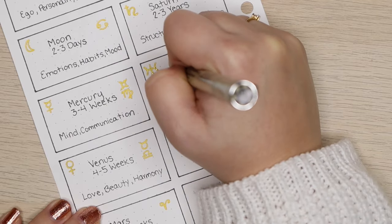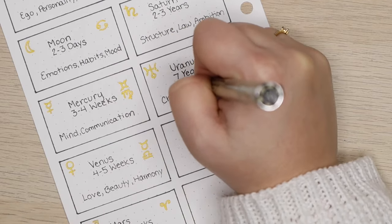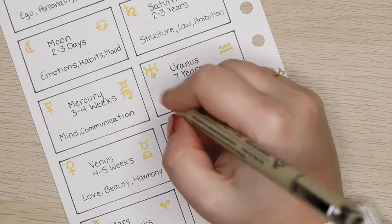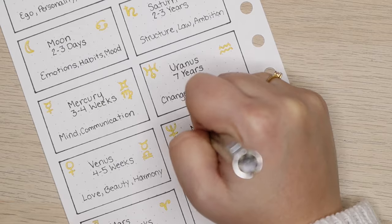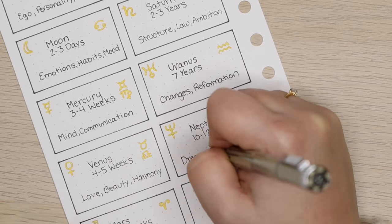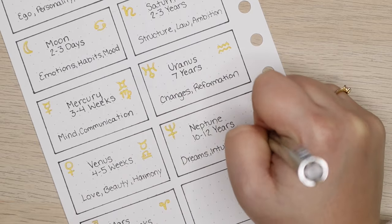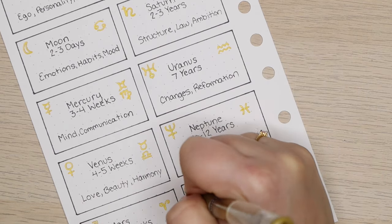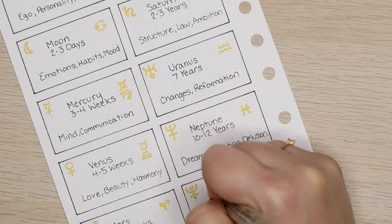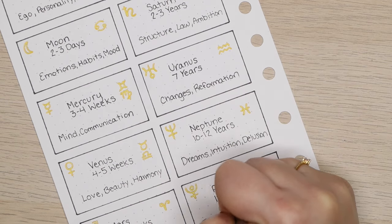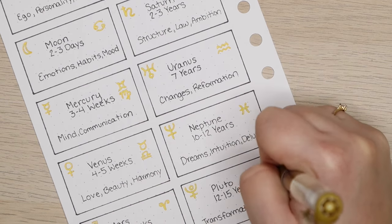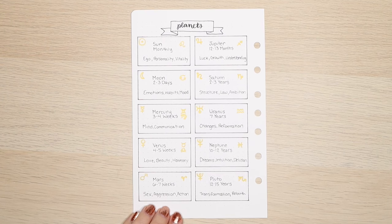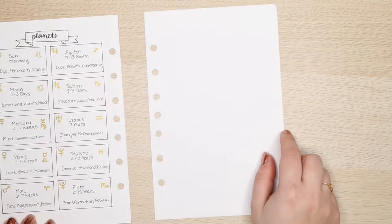The planet that has the longest transit is Pluto and it transits every 12 to 15 years between signs. It rules over Scorpio and it deals with transformation, power, death, rebirth, and evolution. So already you can see how these things start to work together. If you see that a planet has moved into a certain house, you can see what area of your life is going to be activated and what part of your psyche will be affected regarding that part of your life.